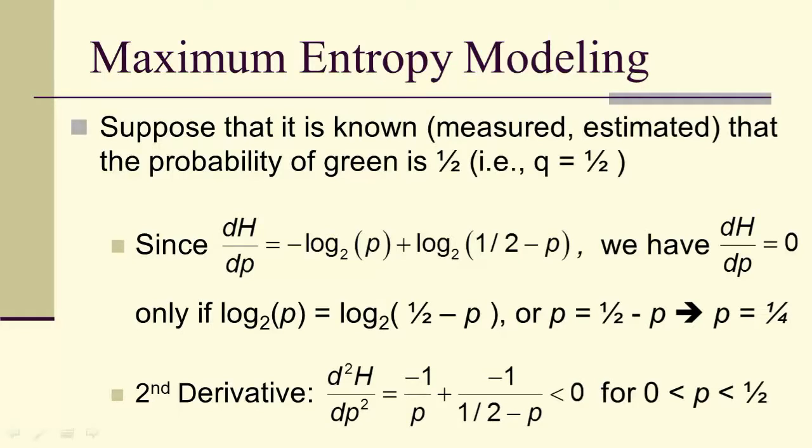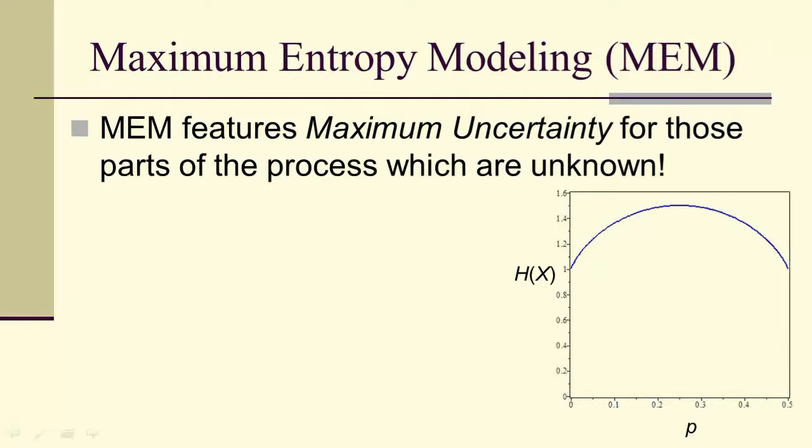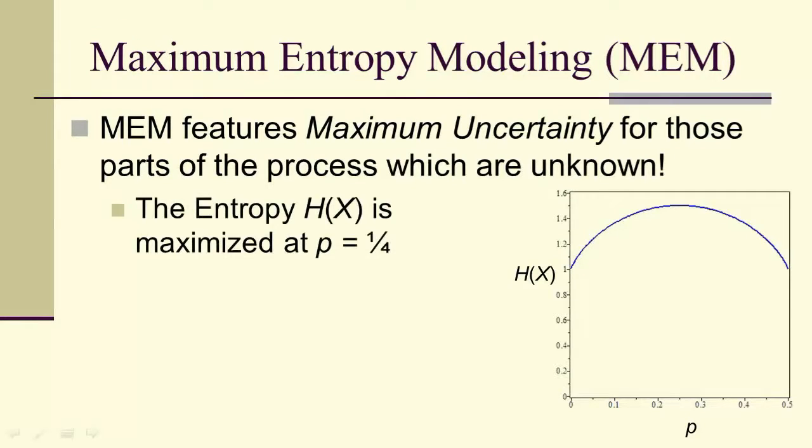The second derivative is less than 0 for 0 < p < 1/2, so by the second derivative test we have a maximum of H when p is equal to a fourth.